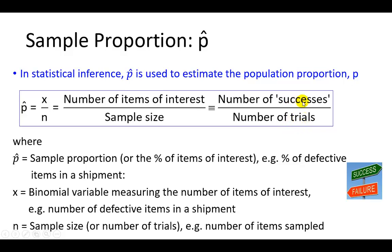To be sure, success here doesn't necessarily mean a good thing. It simply refers to what it is that you're interested in learning about. It could be, for example, the number of female executives in a certain industry, the number of likely voters supporting certain candidates or initiative, the number of defective items in a shipment. So p hat calculates the proportion of, in this example, defective items in the shipment, or the proportion of voters supporting a referendum, the proportion of female executives in a certain industry.